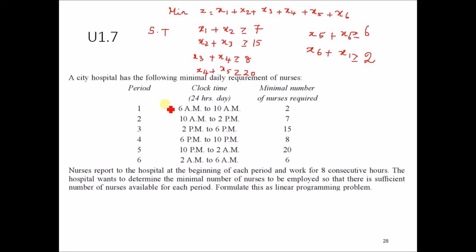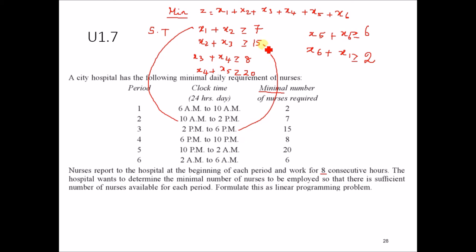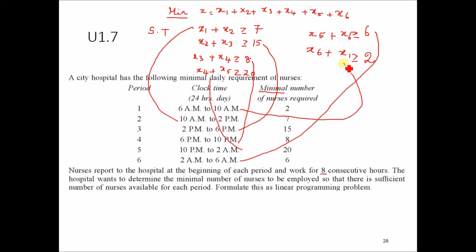A city hospital has the following minimal daily requirement for nurses. The clock times and minimum number of nurses required are given. Since the problem says 'minimal,' it is a minimization problem. Nurses work 8 continuous hours. From 6 to 10, it is only 4 hours, and from 4 to 12 it is 4 hours. The constraints are: x1 plus x2 ≥ 7, x2 plus x3 ≥ 15, x3 plus x4 ≥ 8, x4 plus x5 ≥ 20, x5 plus x6 ≥ 6, and for the 6 AM to 10 AM slot: x6 plus x1 ≥ 2.